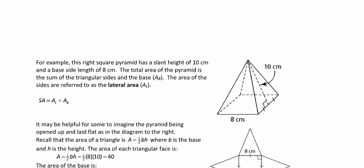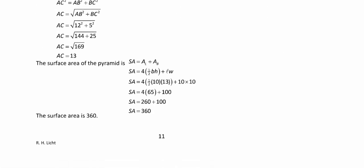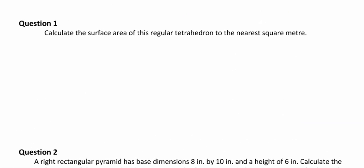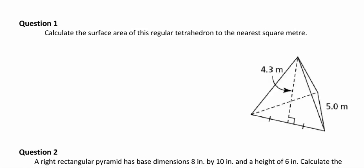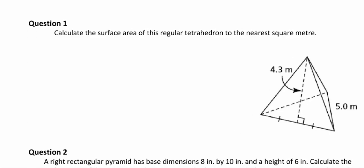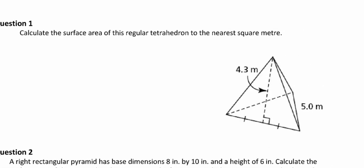This first example is a review. Calculate the surface area of a regular tetrahedron to the nearest square meter. Note: the picture didn't copy into the notes very well, so it's been added — you may need to reprint or draw it. A tetrahedron has four equal faces, all the same length, so we just need to find the area of one triangle and multiply by four.